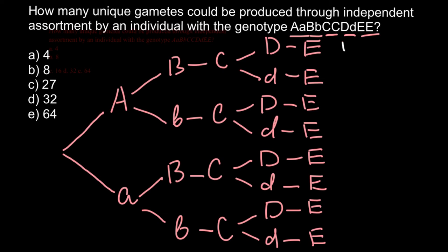now we can count how many different variants we have of the gametes. So this is going to be the first variant, and here is the second variant, third, fourth, fifth, sixth, seventh, and eighth.